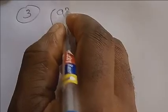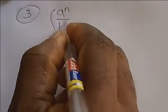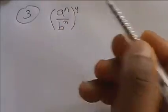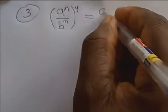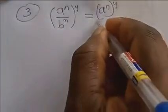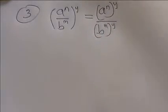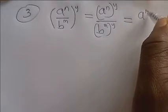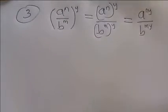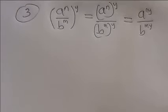Law number 3: if you have (a^n / b^m) raised to power y, you can separate this into a^n raised to power y, over b^m raised to power y. So your answer becomes a raised to power ny, over b raised to power my.